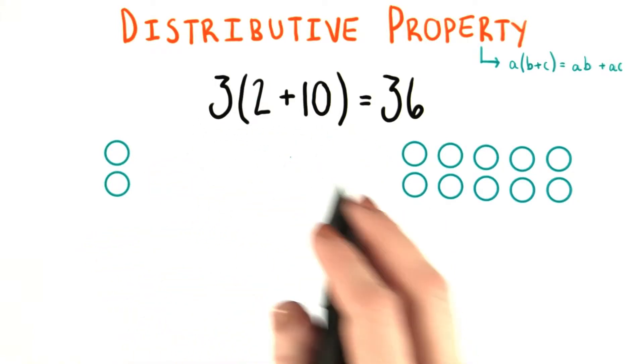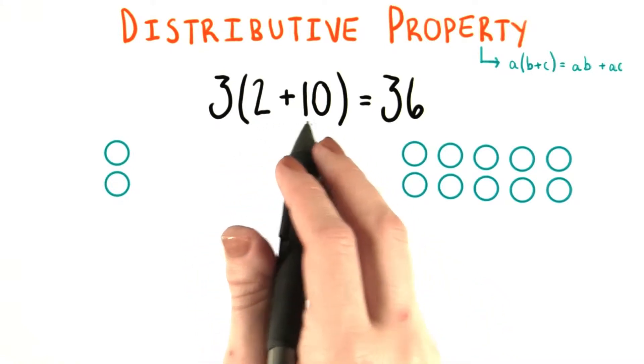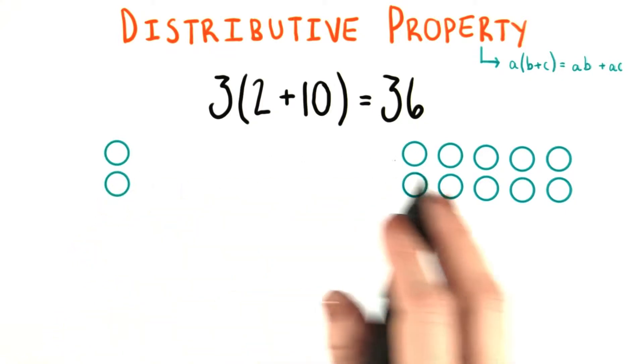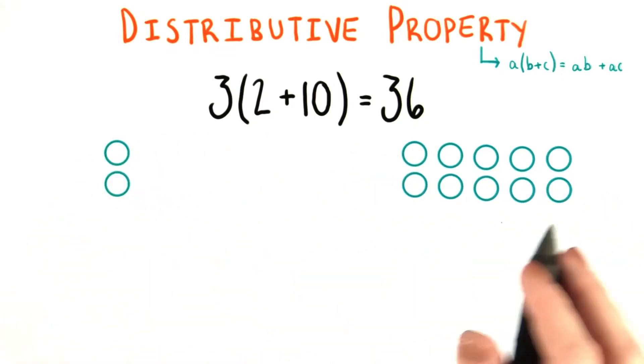So if we were to solve this problem the first way that we talked about, we would do this addition inside the parentheses first and then our multiplication. So we would take these two groups, the 2 and the 10 circles, and merge them into one group.